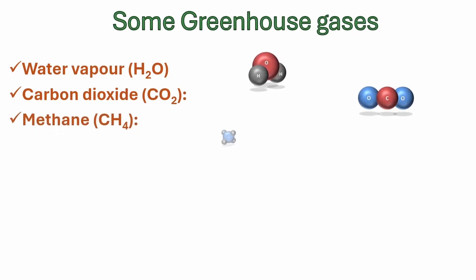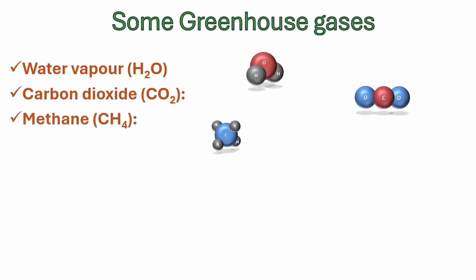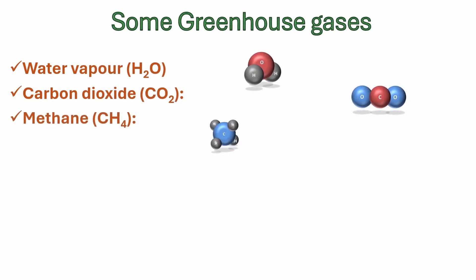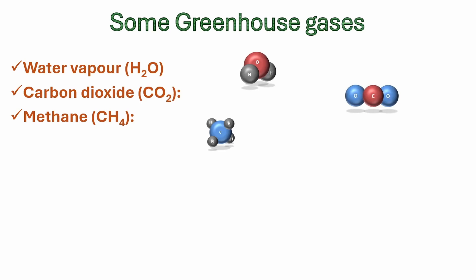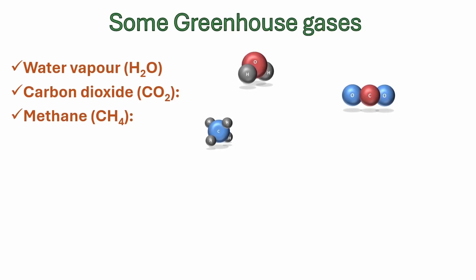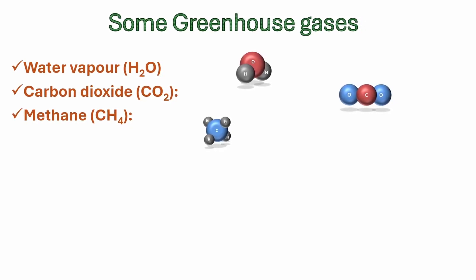Methane, the second most important human-made greenhouse gas. It is emitted by agriculture, livestock, landfills, coal mining, oil and gas production, and other sources.